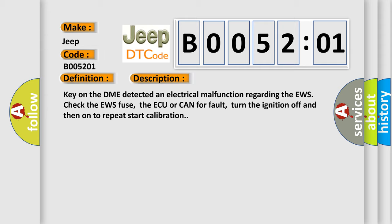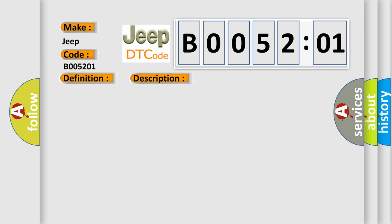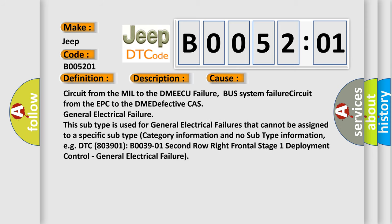This diagnostic error occurs most often in these cases: circuit from the MIL to the DME ECU failure, bus system failure, circuit from the EPC to the DME defective CAS, general electrical failure. This subtype is used for general electrical failures that cannot be assigned to a specific subtype category information and no subtype information, e.g., DTC B003901, B003901 second row right frontal stage one deployment control, general electrical failure.